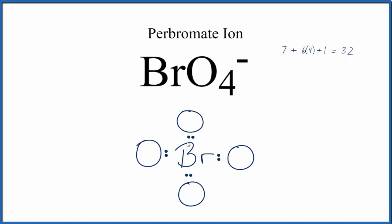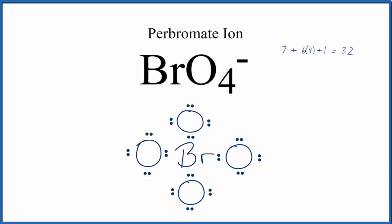And then we'll go around and complete the octets on the outside. At this point, we've used all 32 valence electrons. We have 8 around each oxygen, so those octets are complete. And then the bromine in the center, that has 8 valence electrons as well.